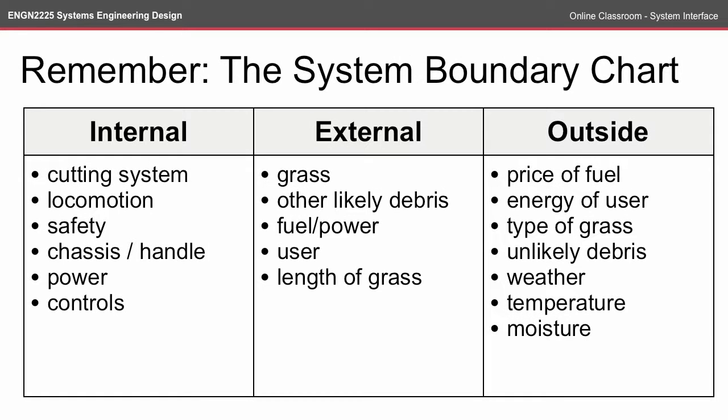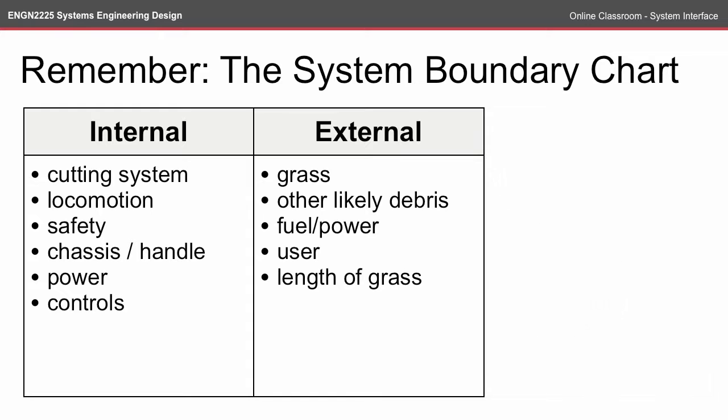Remember the system boundary chart from the previous episode. We have the internal, the external, and the outside of the scope categories, and within them some of the entities that might fit within those categories. For the purposes of the system interface, we're really just concerned about the internal and the external categories.